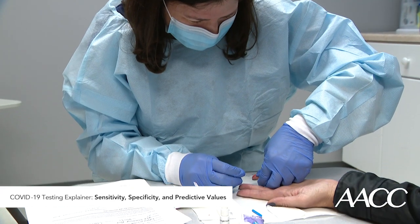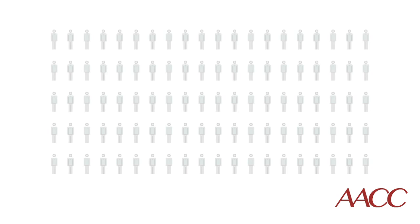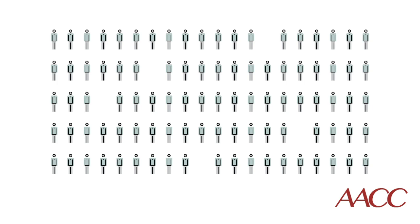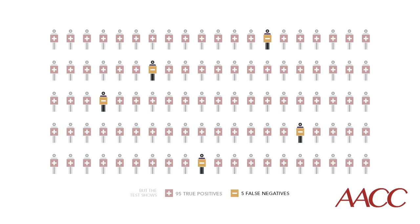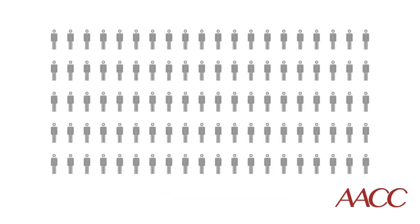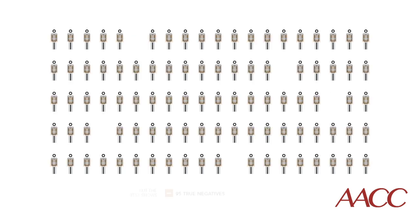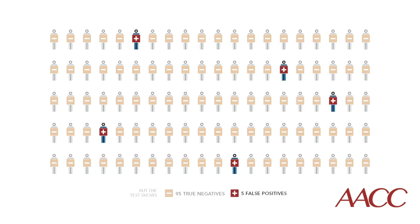For example, suppose you're using a test to detect antibodies to the coronavirus, and assume this test is both 95% sensitive and 95% specific. If you perform that test on 100 people with antibodies, you would expect to get 95 true positive results and 5 false negative results. Likewise, if you perform the test on 100 people without antibodies, you would expect to get 95 true negative results and 5 false positive results.